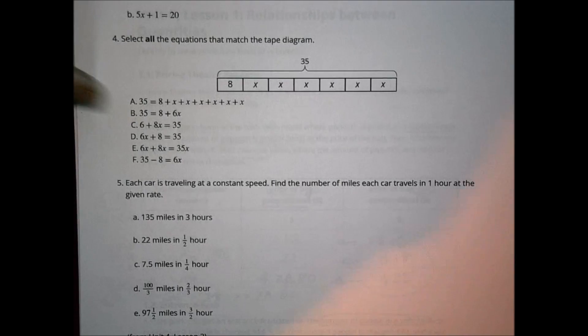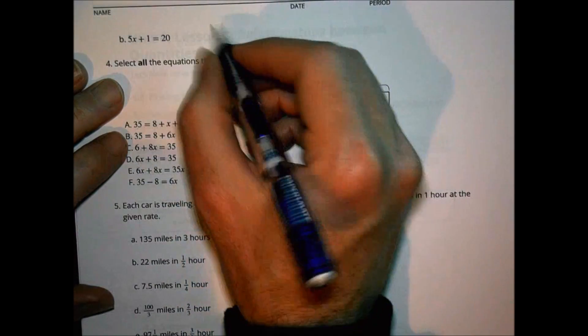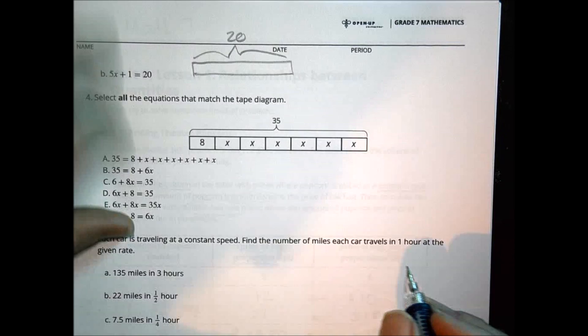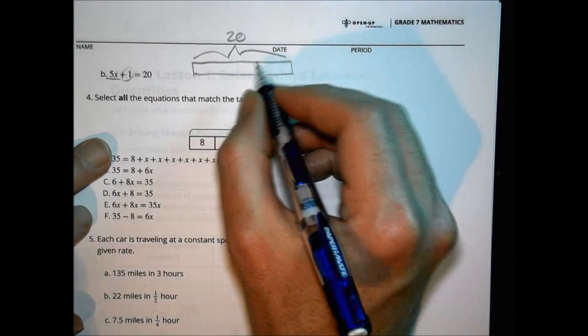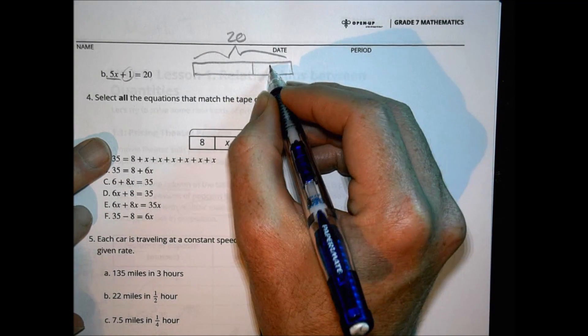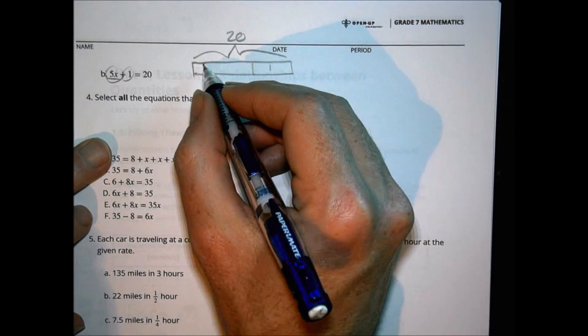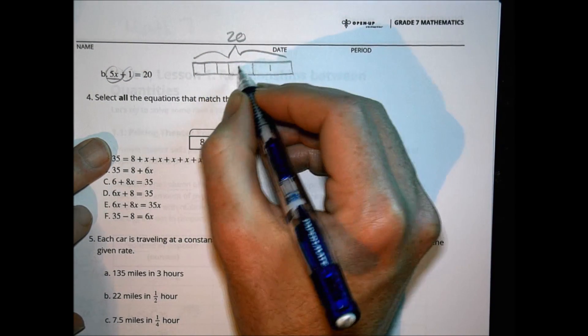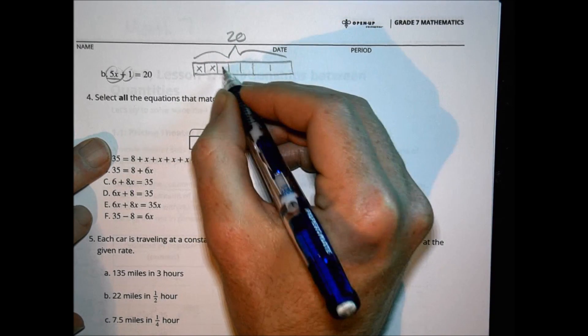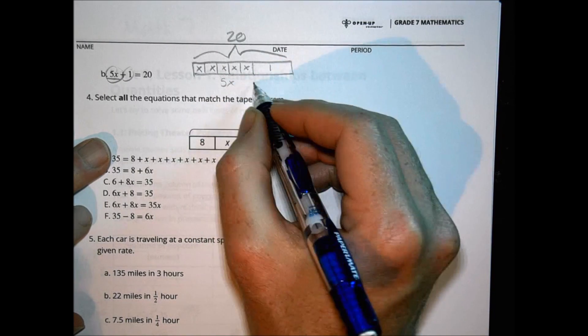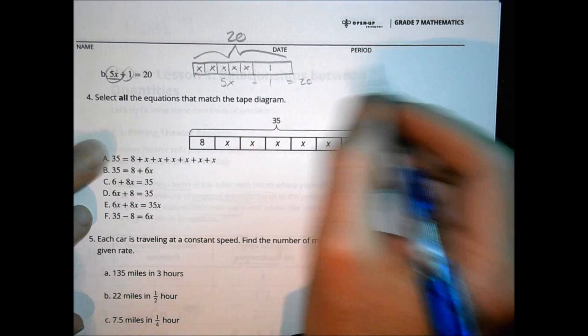For the second tape diagram, also totaling 20 but different: 5x plus 1 equals 20. I break the bar apart so that one section is labeled 1, and the remaining portion is divided into 5 equal parts each labeled x. So I have 5 equal x sections and a plus 1 section, all equaling 20.